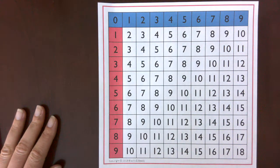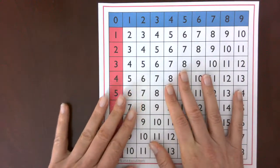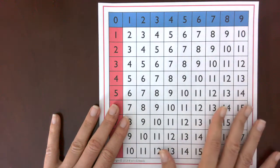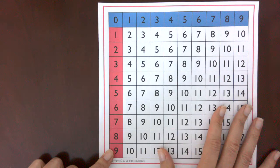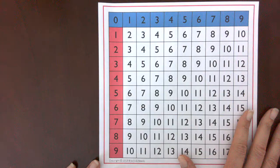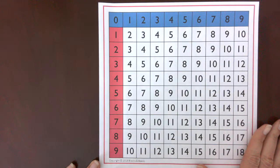In this video I'm going to show you how to use an addition finger chart. To start with, we have the numbers zero through nine across the top and zero through nine across the side. These represent the two addends, or the two numbers you'll add together, and in the middle we have all the sums.